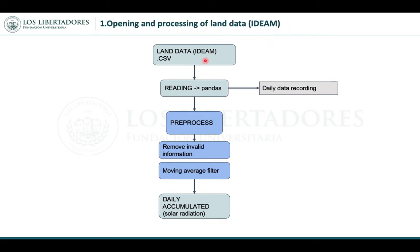For the first stage, opening and processing of land data: this data is contained in a CSV file. We read this file using the Pandas library from Python. We then apply a pre-processing step that removes invalid information and applies a moving average filter to remove data not important for the analysis. This stage gives us a daily accumulated solar radiation value.